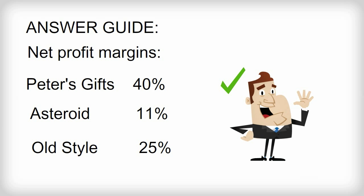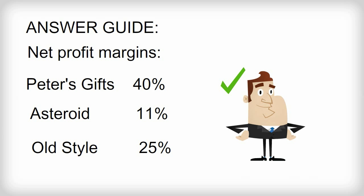Peter's higher net profit margin might be because he has lower costs than the others, or it may be because he is able to set a higher price, or it may be a combination of the two.